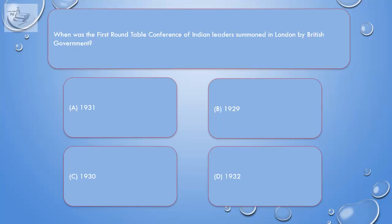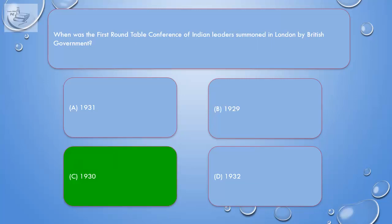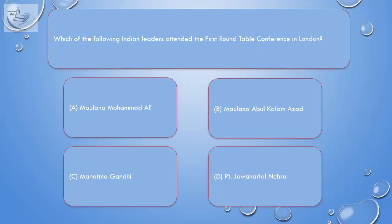A. 1931, B. 1929, C. 1930, D. 1932. Correct answer is C. 1930.